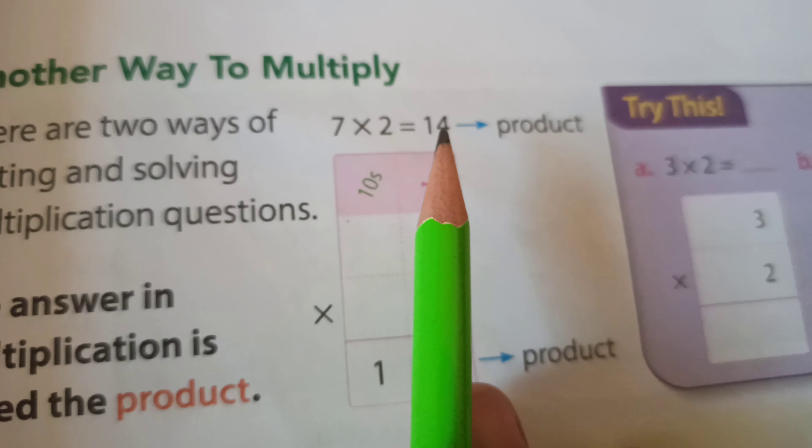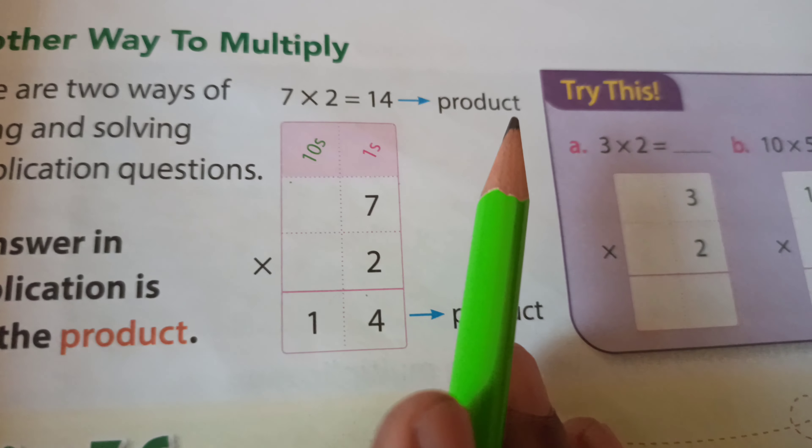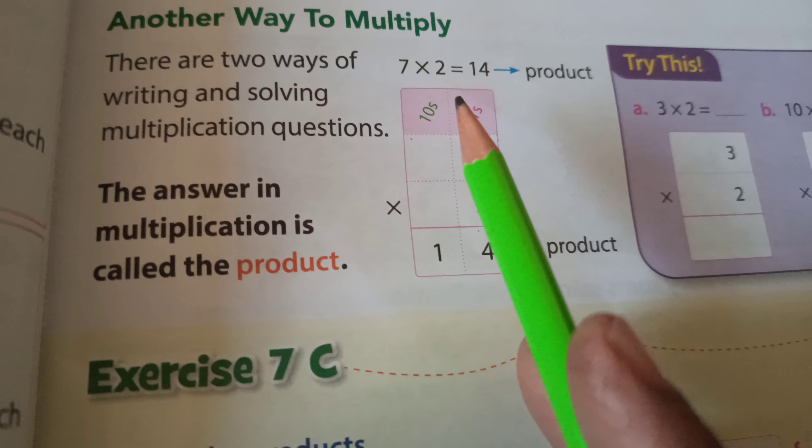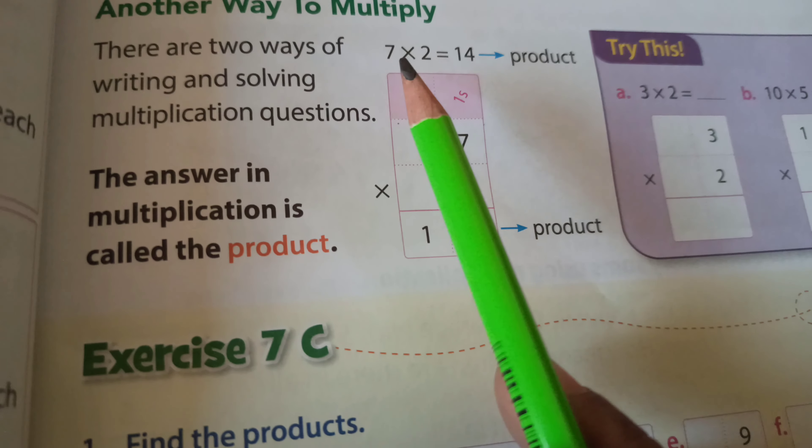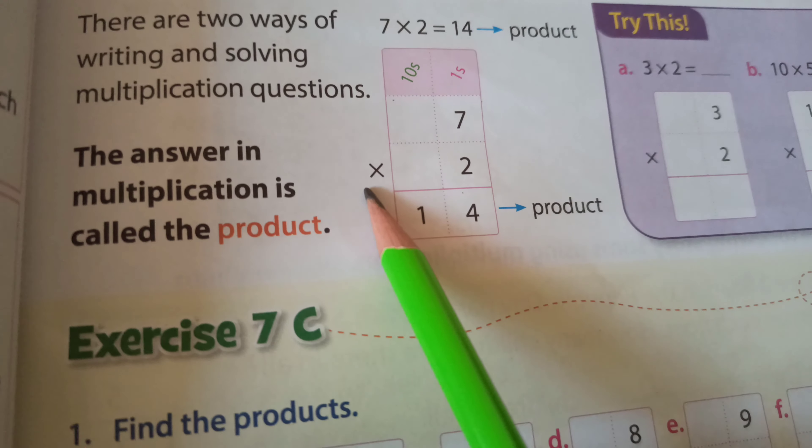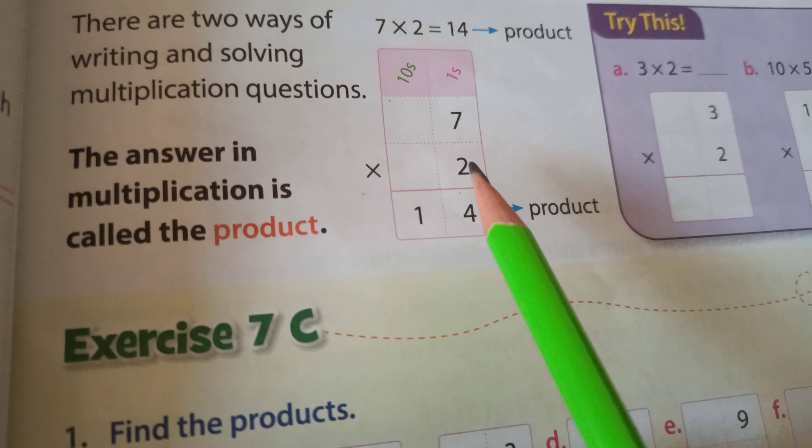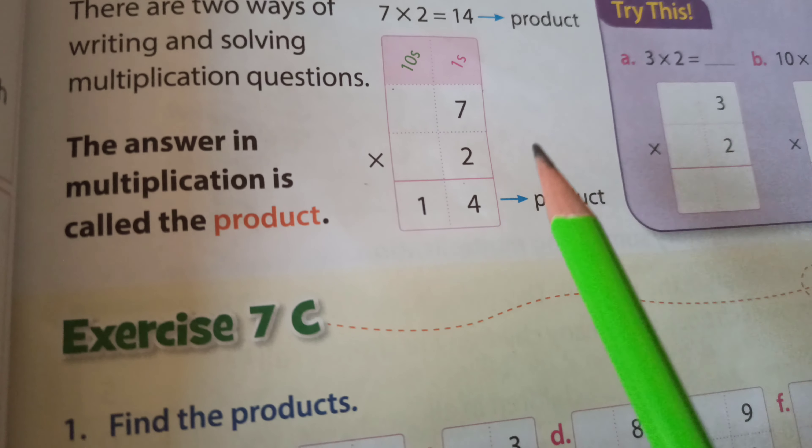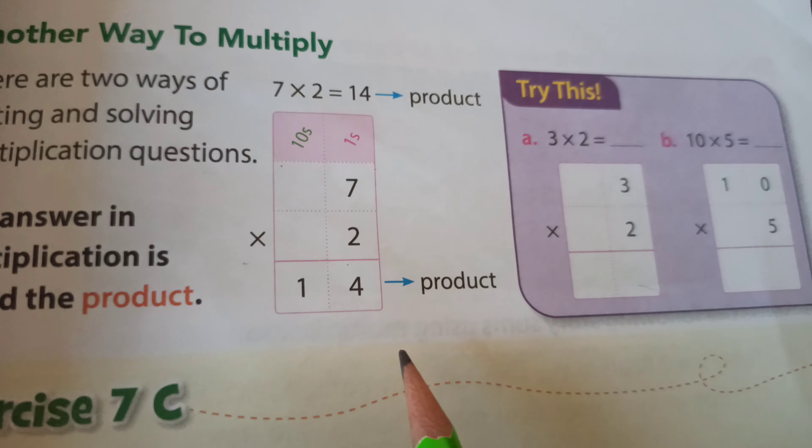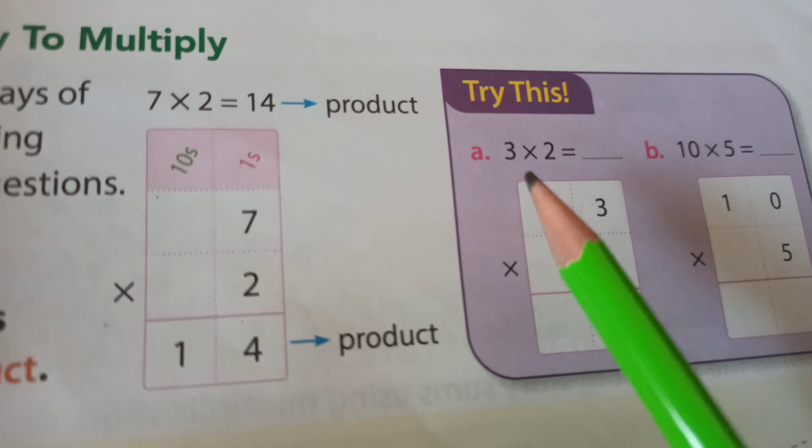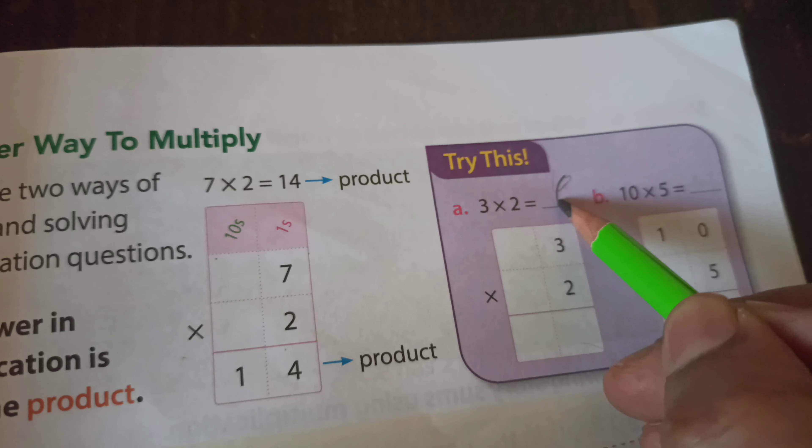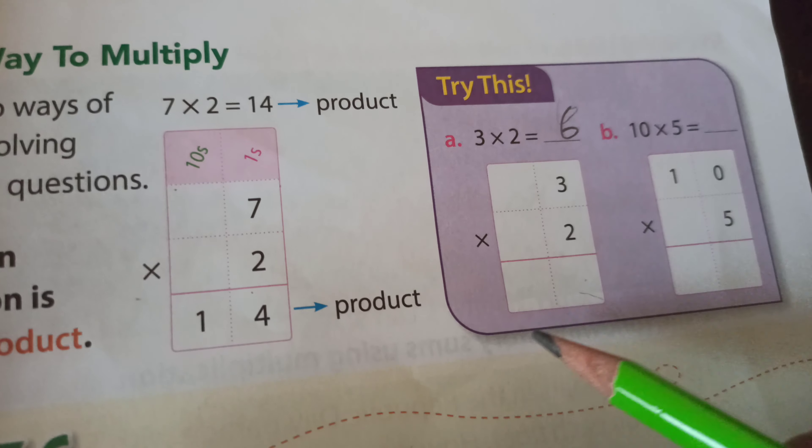Another way to multiply. There are two ways of writing and solving multiplication questions. See, 7 multiplied by 2 equals 14. The answer in multiplication is called the product. See how you solve this: 2 in ones place, 7 in ones place. This one is ones place, this one is tens place. 7 multiplied by 2 - two 7s are 14. Write 4 in ones place and 1 in tens place. This one is the product.